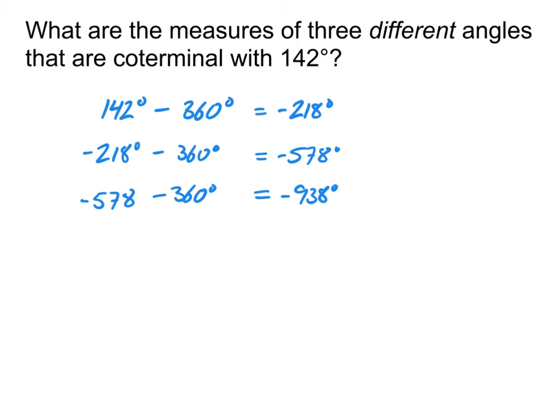But remember, you can actually add or subtract 360 times any integer value. So I could do 360 times 20 with my original 142 degrees, and I'm going to get a coterminal angle. And even though it's a really big number, it still is actually stopping at the exact same point on the circle, which is the whole point of coterminal—saying that these are actually the same angles when we look at a circle.